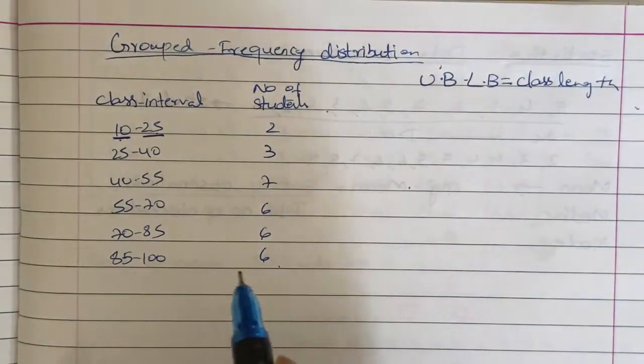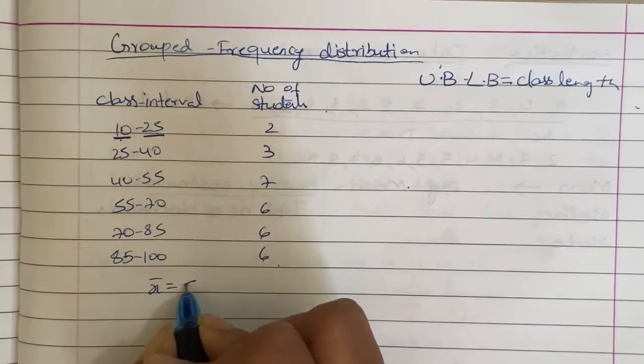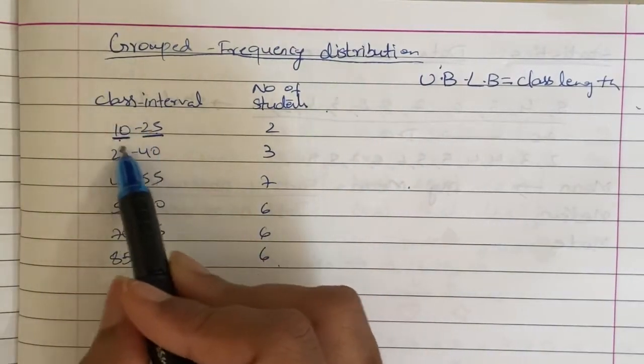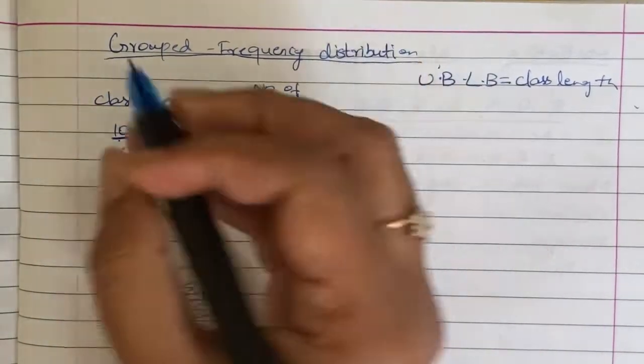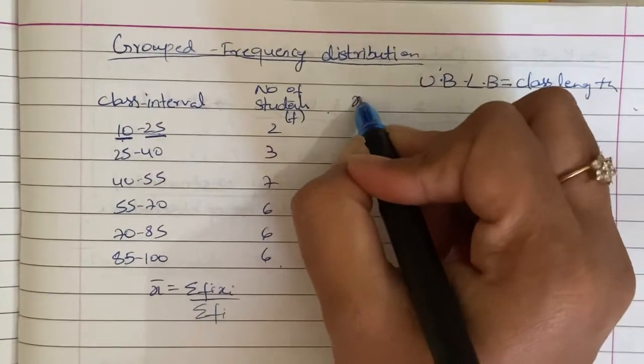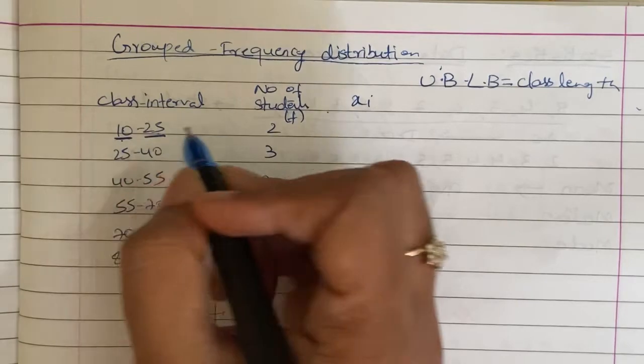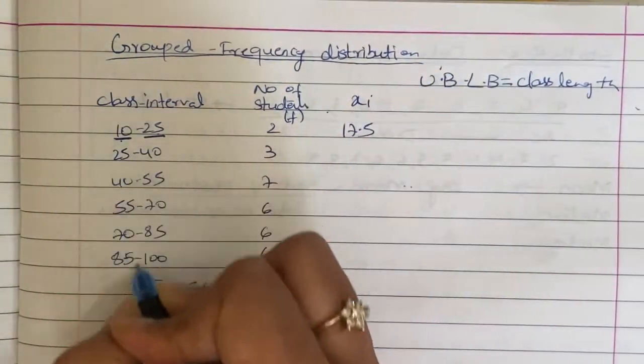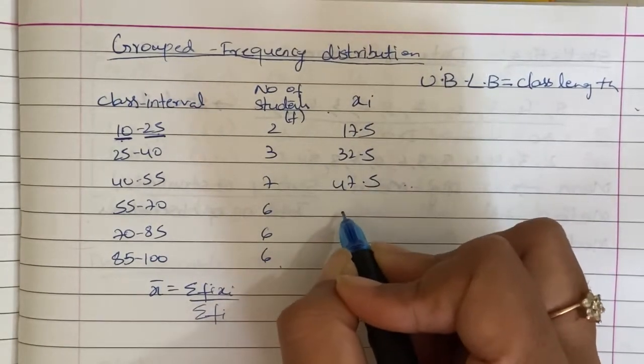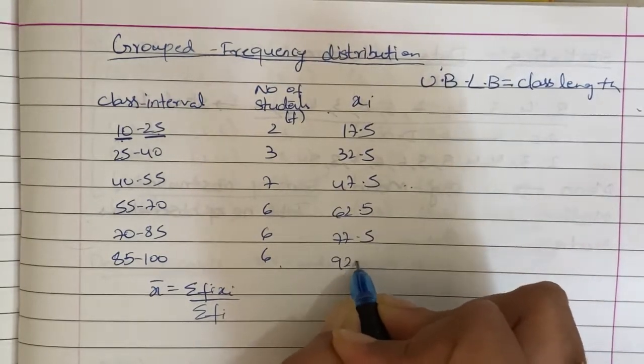Now in this case, we will find out the mean. Actually, the mean formula is x bar is equal to sigma of fi xi by sigma of fi. So this is the frequency. But x i will be 2. Now we will find fi xi. In this case, the average of these two numbers is xi. So average of 25 plus 10 is 35 by 2. That will be equal to 17.5. That will be similar: 32.5, 57.5, 62.5, 77.5, 92.5.